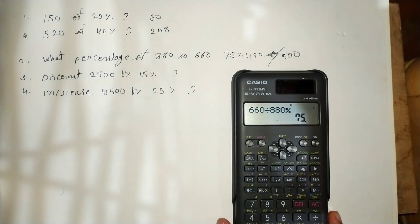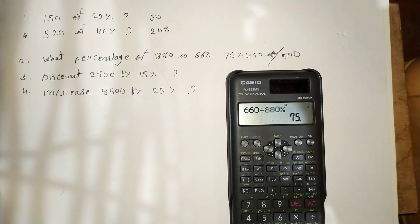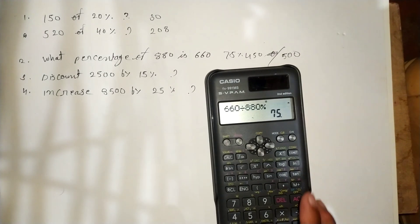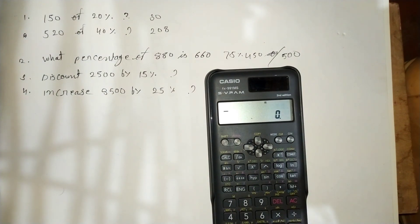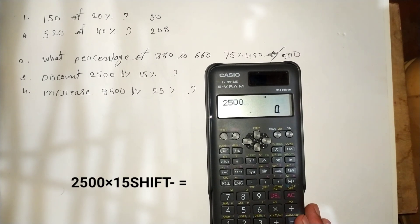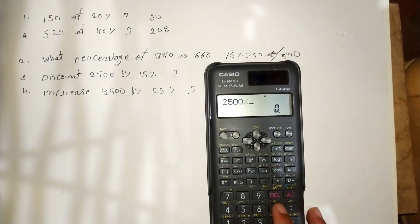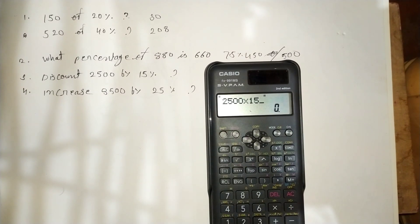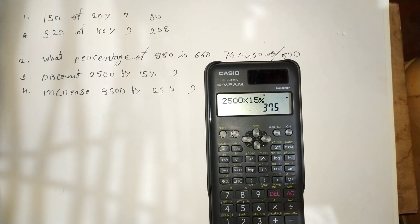I hope you understand. Next question: 500 by 15 percent. Sometimes we see offers on products — for example, a product priced at 2500 with a 15 percent discount. Press 2500 multiplied by 15, then press Shift and Equals, then press Minus.